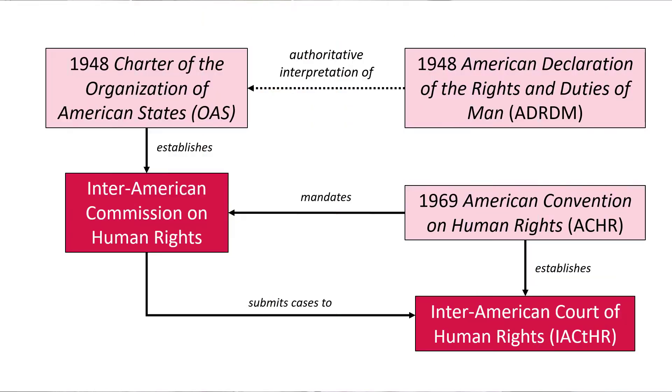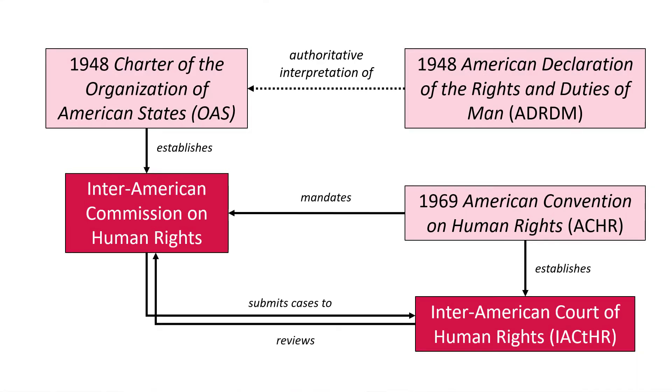We are faced with two human rights institutions, and you may validly ask how they relate to one another. To put it simply, the Inter-American Commission on Human Rights receives individual complaints, reviews them initially, and tries to reach a settlement between the state party and the petitioner. If no settlement is reached, the Commission may — if a state party has ratified and accepted the jurisdiction of the Inter-American Court — submit a case to the Inter-American Court of Human Rights, which reviews the findings and comes to a legally binding decision on the merits of the case.